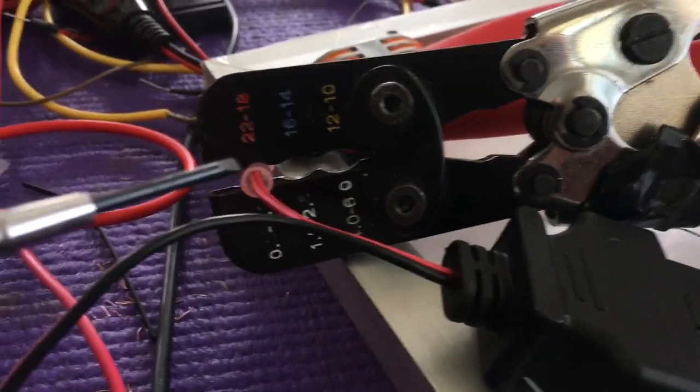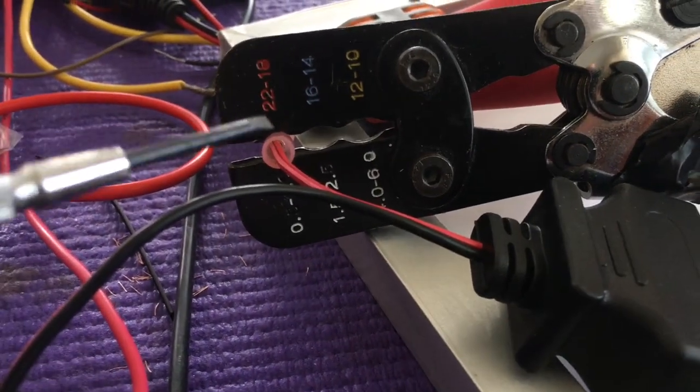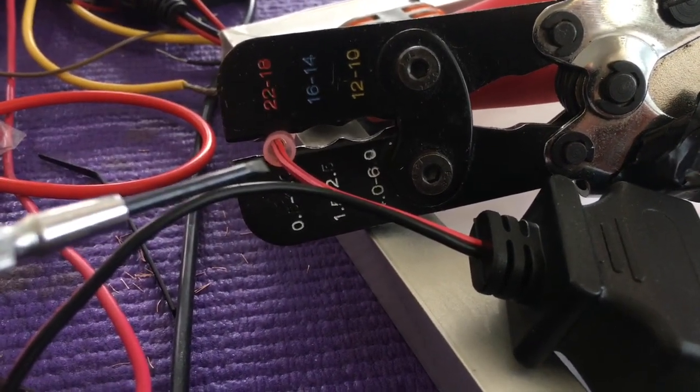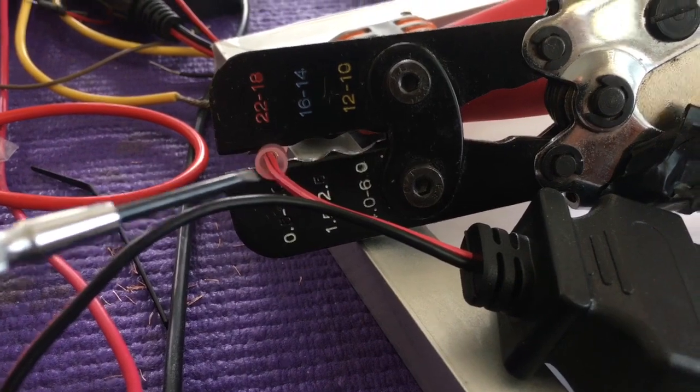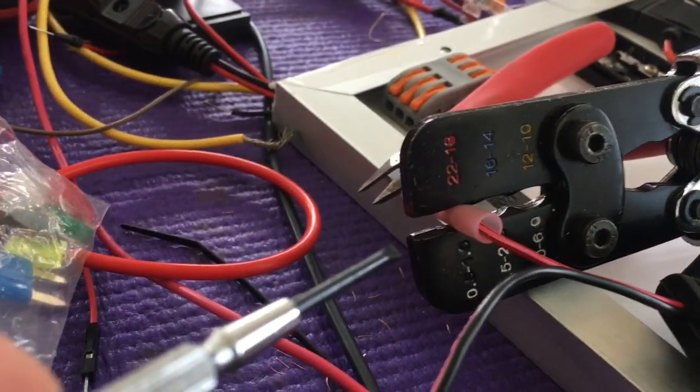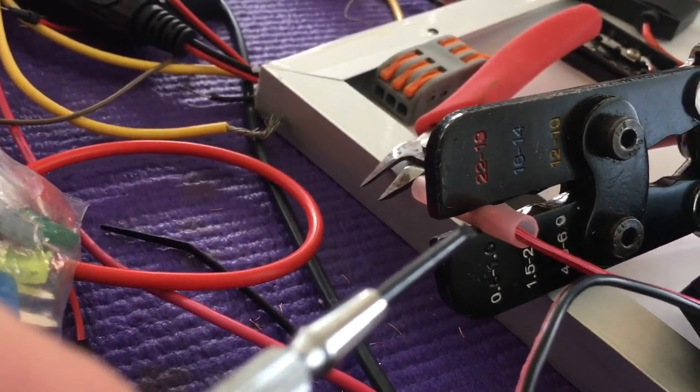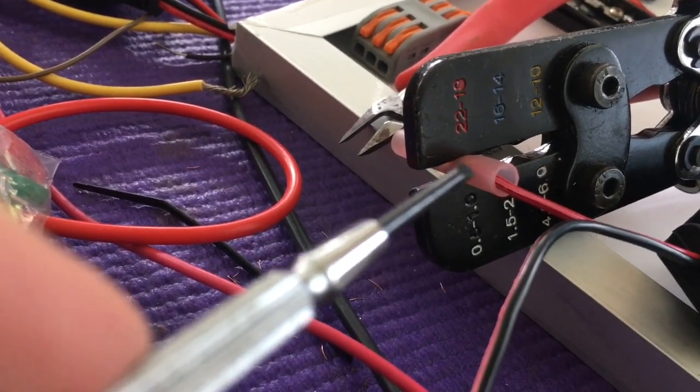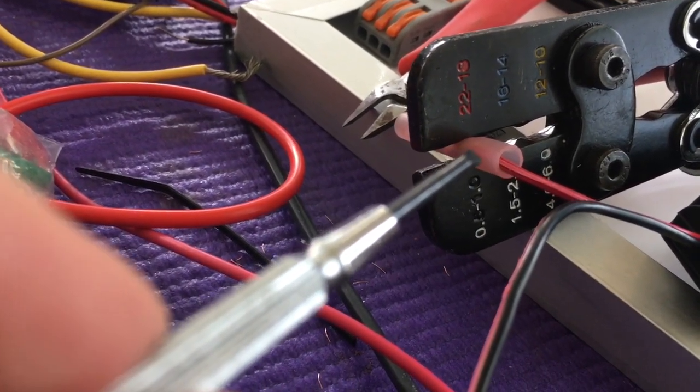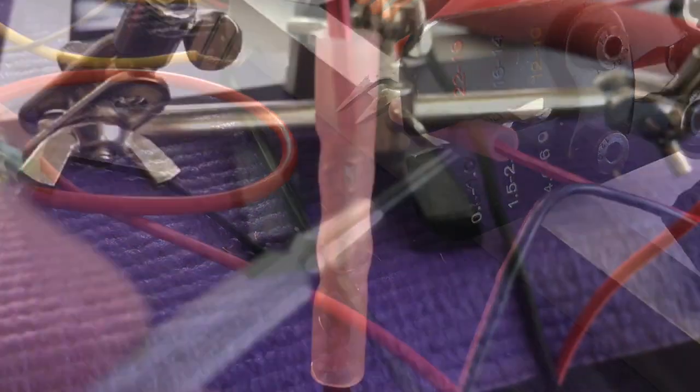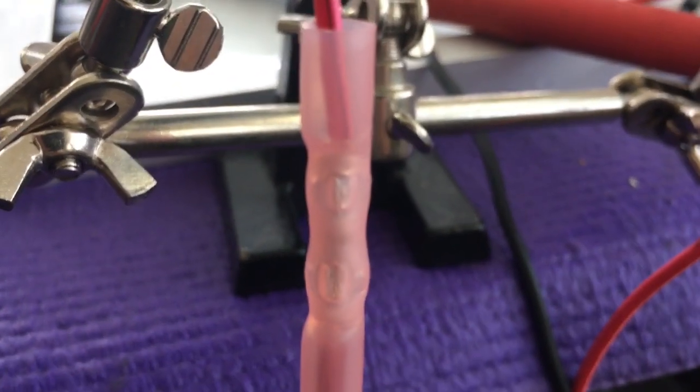I'm using a crimper here. I've got it set up correctly and these heat shrink tubing butt connectors are marine grade and they have adhesive.